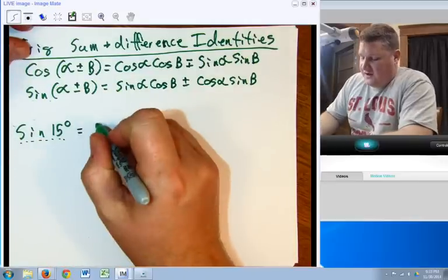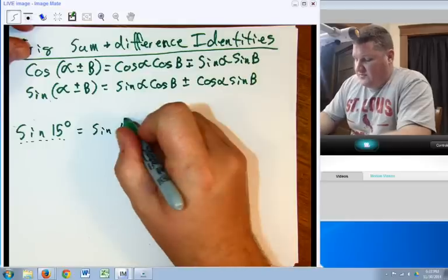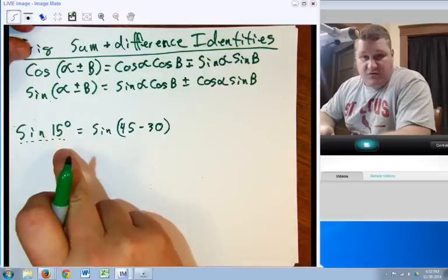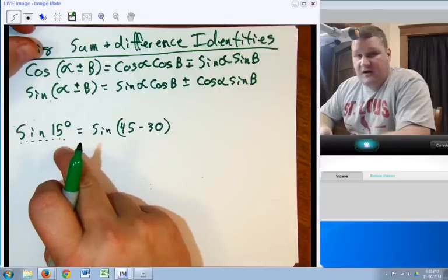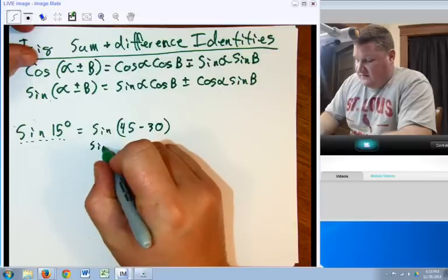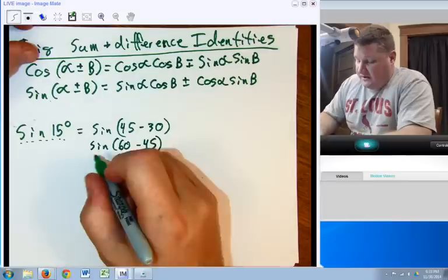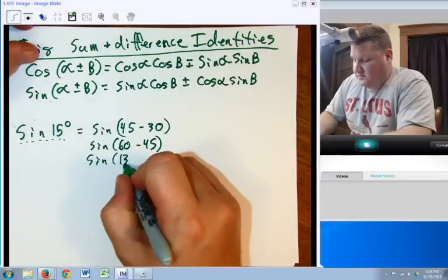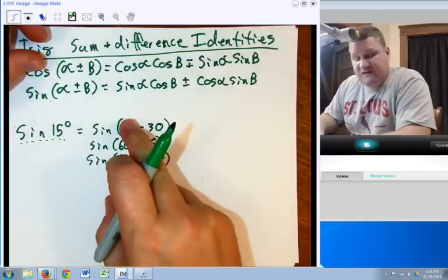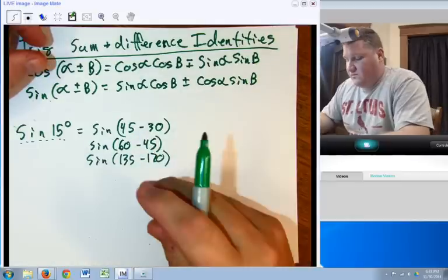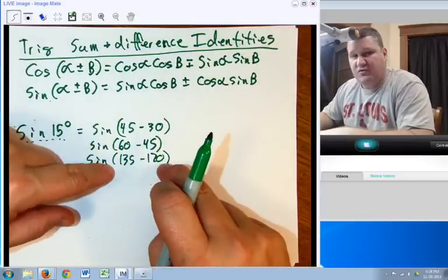For example, I could rewrite sine of 15 degrees as the sine of 45 minus 30. That would equal 45 minus 30, because you do parentheses first, would equal 15. Now, that's not the only way to do this. We could say that's the same as the sine of 60 minus 45. That also would be 15. I could say that's the sine of 135 minus 120. That would also make 15. All we're doing is we're finding a way to redefine 15 as a sum or difference of two different angles that we do otherwise know.